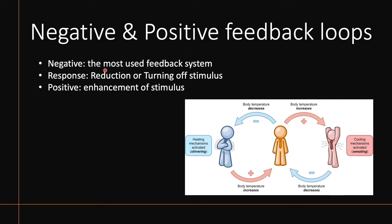In a negative feedback loop, you get reception of a signal — maybe a certain hormone is too high, or something is off, either too high or too low — which sends that signal to your control center for computing to figure out what to do. The response is to reduce or turn off that initial stimulus that was picked up. We can see a schematic here illustrating a negative feedback loop.